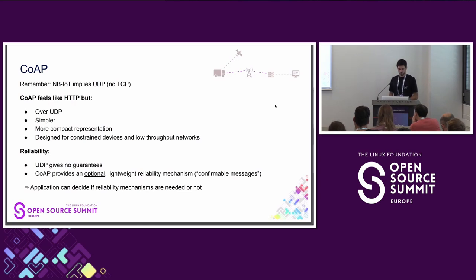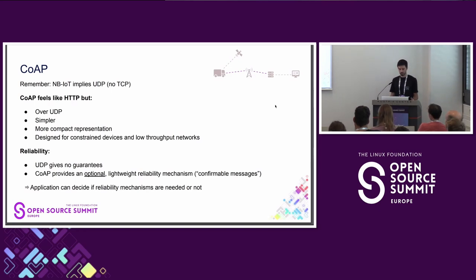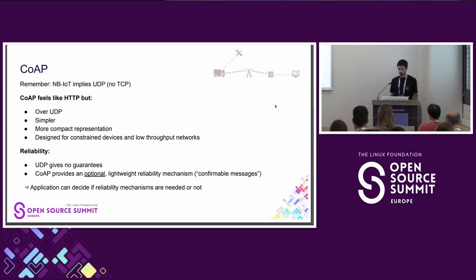What about the application layer? What protocol do we want to use to communicate with ThingsBoard? Remember NB-IoT implies UDP, so MQTT is not an option, but there is also CoAP. CoAP feels like HTTP but works over UDP. It's much simpler, has less overhead, a more compact representation, and is designed for constrained devices and low-throughput networks. UDP guarantees no reliability, but CoAP has a lightweight reliability mechanism that you can use if needed — so you can decide at the application level whether you need reliability for certain messages or not. You have the freedom to choose.